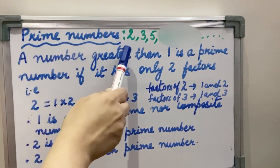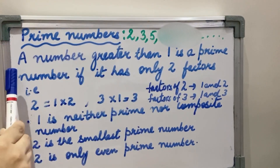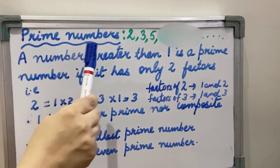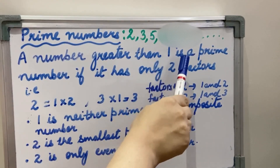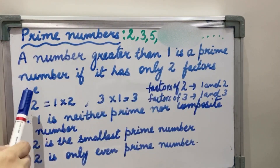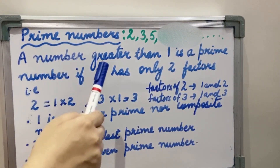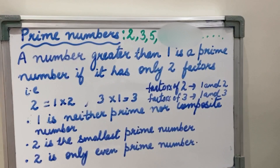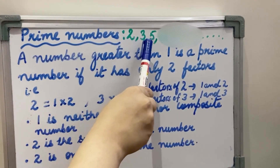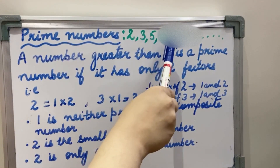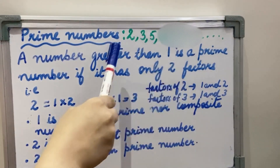Prime Numbers: a number greater than 1 is a prime number if it has only 2 factors. Like 2, 3, 5, 7, 9, 11.